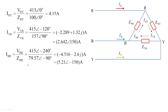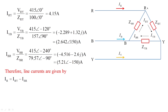With the phase currents known, we calculate the line currents. Applying KCL at node R: I_R equals I_RY minus I_BR, since I_R and I_BR are incoming while I_RY is outgoing. The sum of currents at a node equals zero. The value of I_R is 6.56 at angle minus 11.6 degrees amperes.